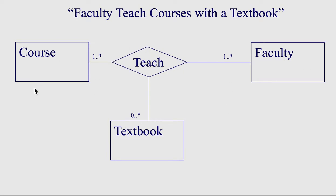This is only ternary because we know they all go together. If they were binary, it would be easier. But for ternary, we have to put them in pairs and try to do one instance of each. So we have a faculty member and a course and they could be using zero or more textbooks. We have a textbook and a faculty member and that could be in one or more courses. And then we have textbook and course — a textbook in a course can be used by one or more faculty members.